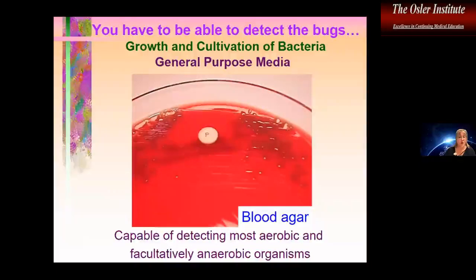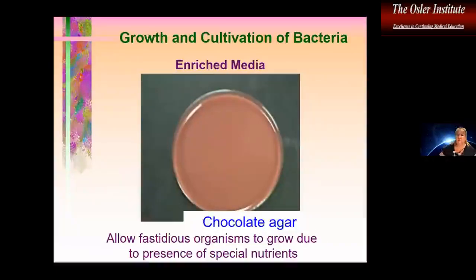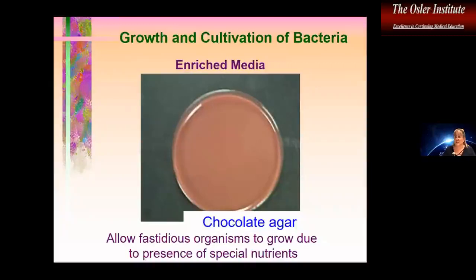Once we've collected our specimen and done our smear, we need to be able to grow it — so let's talk briefly about media. We have blood agar, which usually contains 5% sheep blood. This is our general-purpose media, able to detect most aerobic and facultatively anaerobic organisms, used to process most specimens in microbiology. We also have enriched media including chocolate agar — unfortunately not made of chocolate — which allows more fastidious organisms like Haemophilus species and pathogenic Neisseria to grow due to extra nutrients. Historically, chocolate agar was prepared by adding blood to agar when it was very hot, lysing the red cells to release nutrients; now we use a chocolate agar base instead.